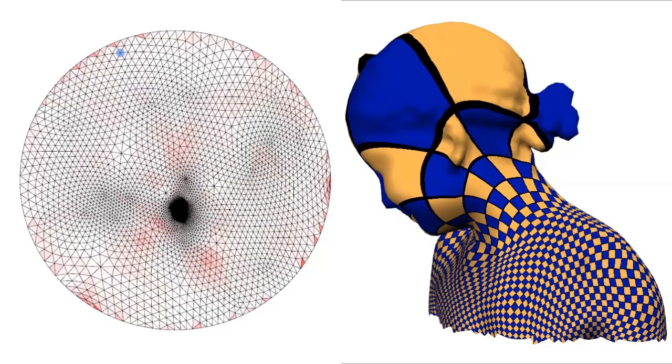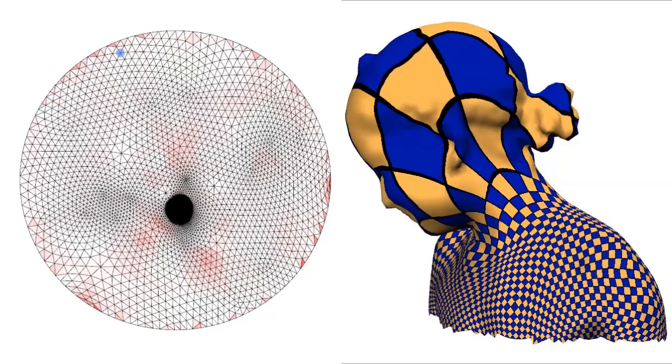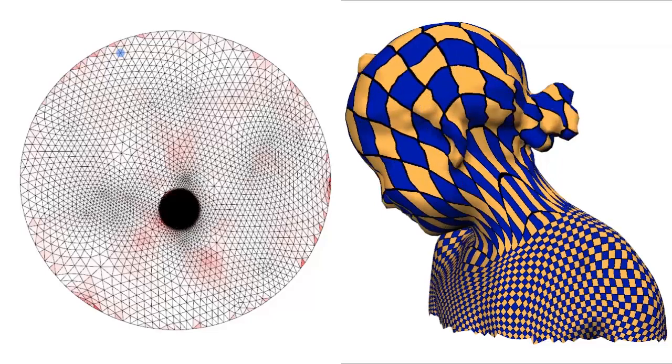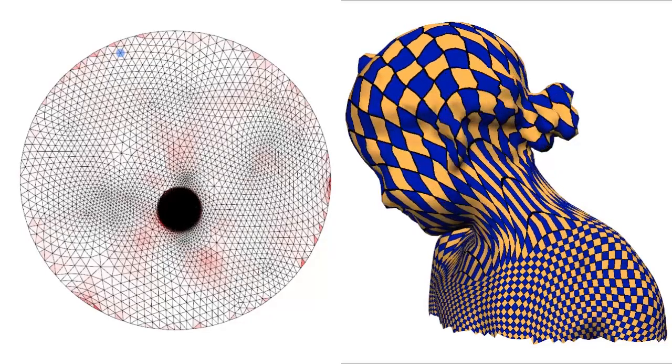Our method could be used to extend any parameterization energy to avoid local flips, as shown in this hard example where we start from Tutte's parameterization and deform it by minimizing the ARAP energy.